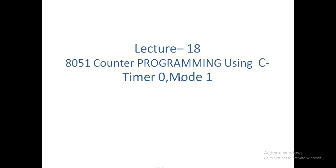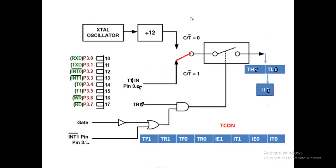The maximum value that can be counted with mode 1 is 65535. Once it reaches 65535, it will overflow, and then the TF0 flag bit is going to overflow. After that, you have to restart from 0. This is the internal circuitry of the 8051 — the crystal oscillator divided by 12 network.